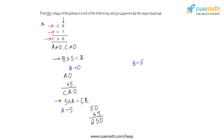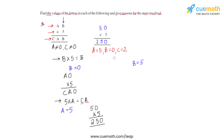This completes the multiplication product for the first set of values. Recording these: the value of a is five, the value of b is zero, and the value of c is two. This is one combination or one set of values for these letters.